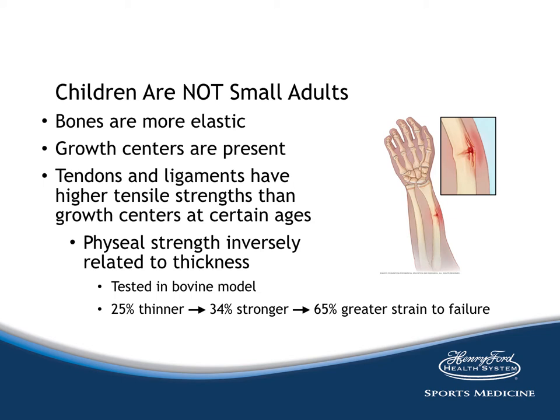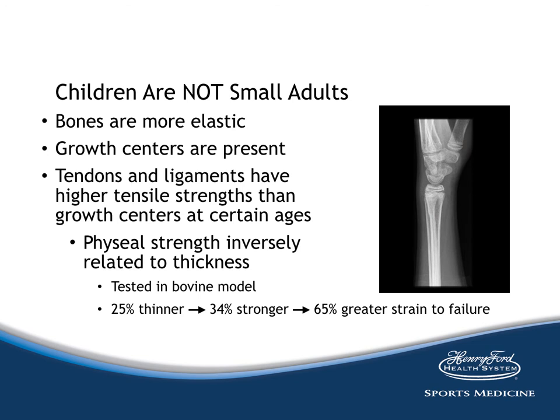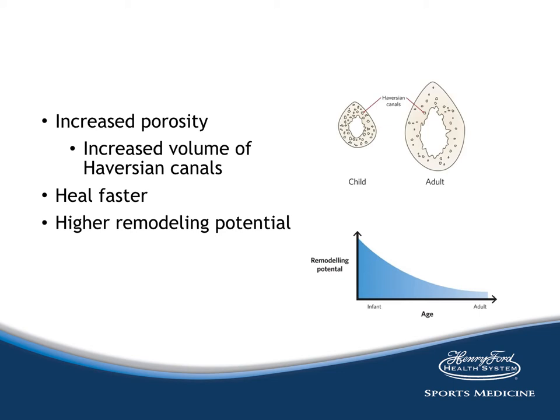In kids, the growth center is often the rate-limiting step, but as maturation occurs and that growth center becomes thinner, it becomes stronger and the strain-to-failure level increases. The increased elasticity of the bone allows us to see things like buckle fractures that we generally wouldn't see in an adult population, where you see more full transverse fractures. When you look at bone in a growing child, it is more porous than in an adult because the Haversian canals are more compact into a smaller area. As the bone grows, these Haversian canals spread out and porosity decreases.